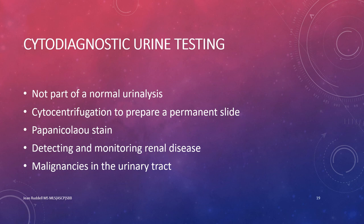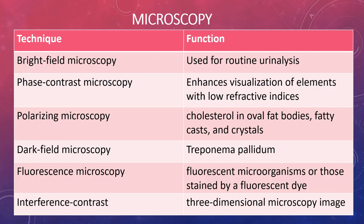Cytodiagnostic urine testing is not part of routine urinalysis. A permanent slide can be created using cytocentrifugation, followed by a Papanicolaou stain, providing an additional method for detection and monitoring of renal disease. This is normally completed as a separate test to detect malignancies in the lower urinary tract. A first morning urine specimen is utilized because it is the most concentrated, and testing is performed by the cytology laboratory. This provides more definitive information about renal tubular changes associated with transplant rejection, viral, fungal, and parasitic infections, cellular inclusions, pathological casts, and inflammatory conditions. Specimens with unusual findings are referred to the pathologist for review.